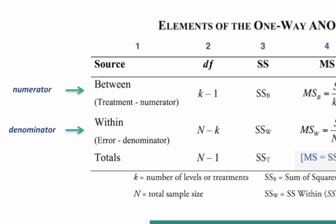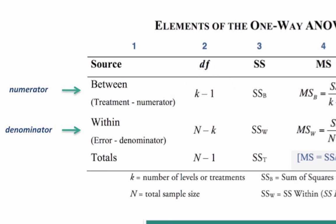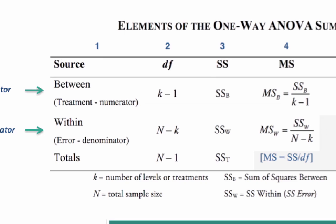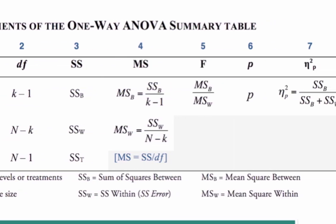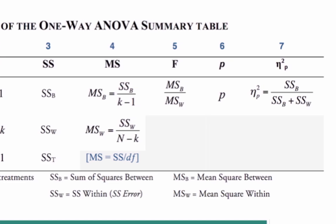For example, under degrees of freedom on the row between, you see k-1. That is the formula for degrees of freedom between. This table is not meant to be explained in a video, but rather to serve as a reference as you are constructing your own ANOVA summary table.